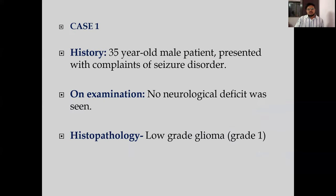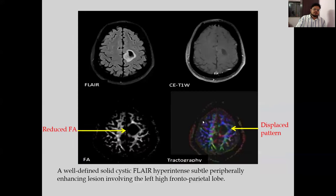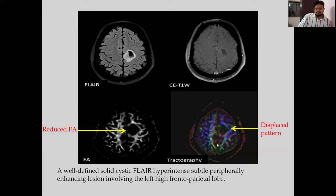Now let's go to the cases. Case 1: a 35-year-old male presented with a complaint of seizure disorder. There was no neurological deficit on examination. Imaging revealed a well-defined solid cystic, T2/FLAIR hyperintense, contrast-enhancing lesion in the left high frontal-parietal lobe. There was reduction in fractional anisotropy, and the lesion caused displacement of white matter fibers. Histopathology revealed it was a low-grade glioma.